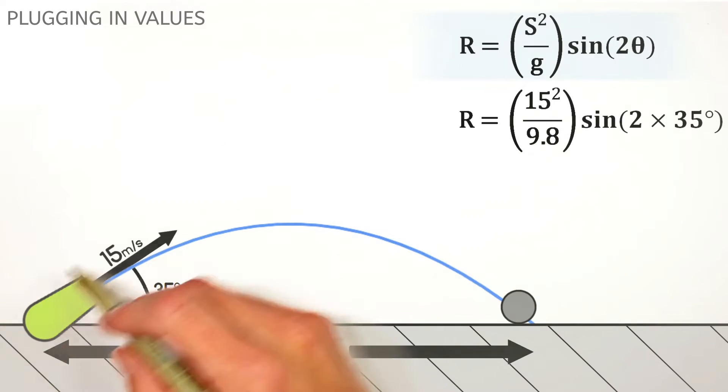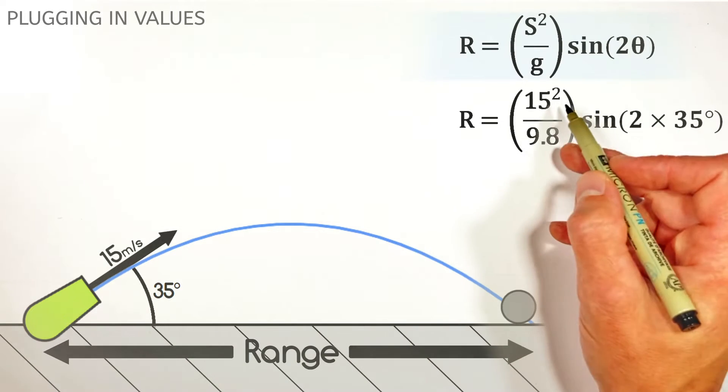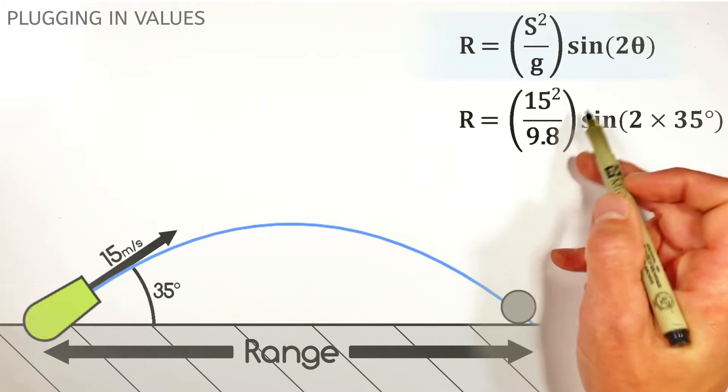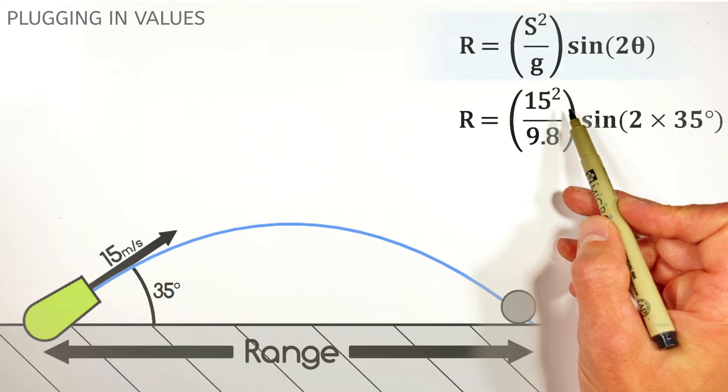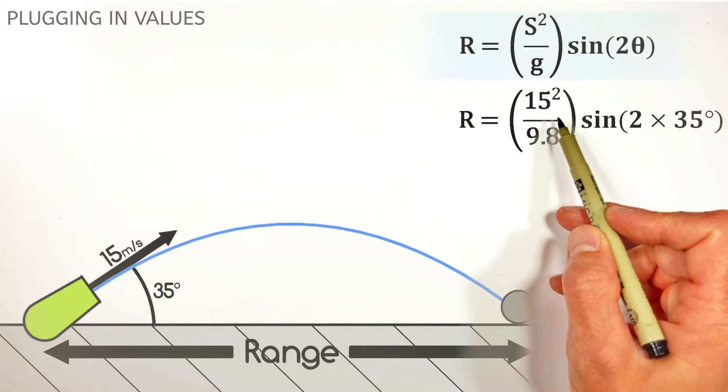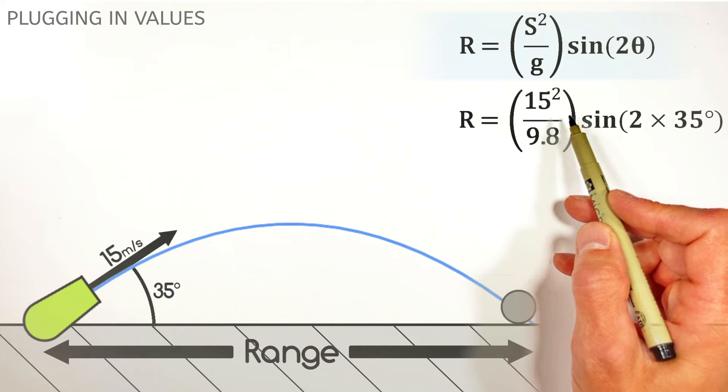And g is the acceleration due to gravity, which, provided this cannon is being fired on Earth, is going to be 9.8 meters per second squared. And the nice part about the range equation is we don't have to worry about positives and negatives. We can just plug in the acceleration due to gravity as a positive value.